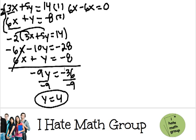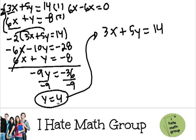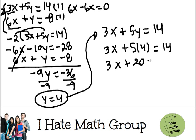Now I can use substitution in order to find x. Pick any equation, either 1 or 2. I'm going to choose number 1: 3x plus 5y equals 14. Now I know the value of y, so 3x plus 5 times 4 equals 14. 3x plus 20 equals 14.